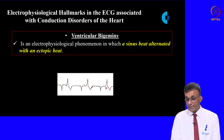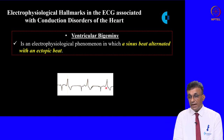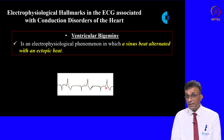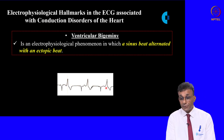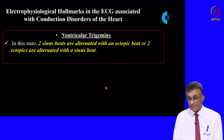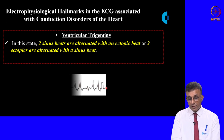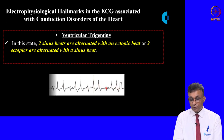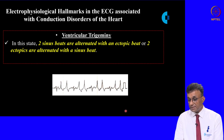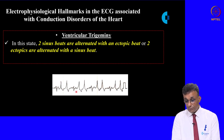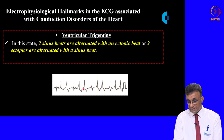These electrophysiological changes are associated with certain arrhythmias which clinicians will discuss further. Ventricular trigeminy involves two sinus beats alternating with an ectopic beat, or two ectopic beats alternating with a sinus beat. This tracing shows two ectopic beats alternating with a sinus beat.